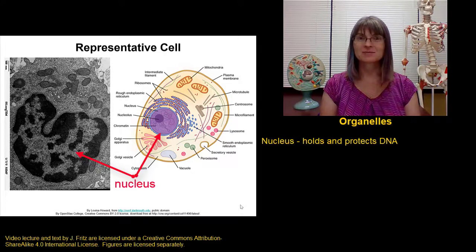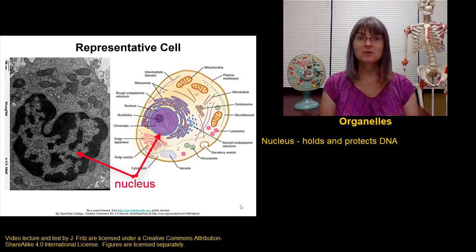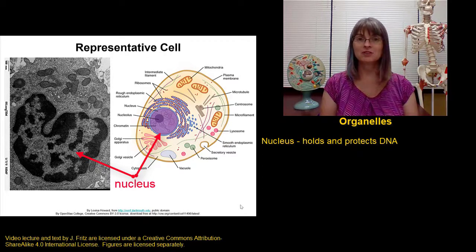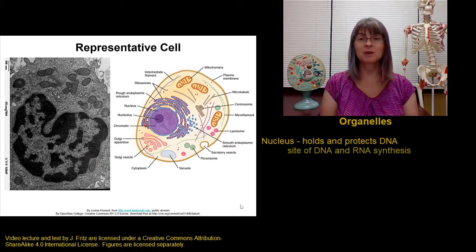Let's start with the nucleus. The function of the nucleus is to store and protect the DNA. Eukaryotic cells — cells that have a nucleus — have a much lower rate of DNA mutation than prokaryotic cells, because the DNA is protected in the nucleus. The nucleus is also where DNA is copied and where RNA is made before it goes out into the cell to make proteins.